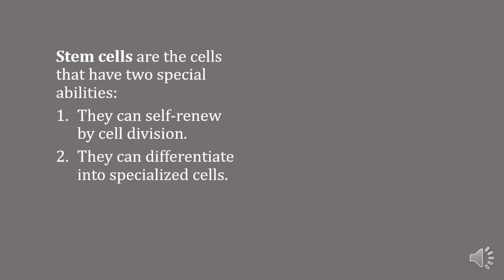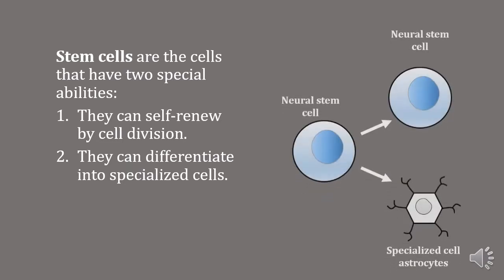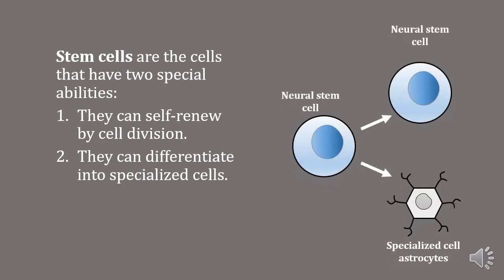Second, they can differentiate into specialized cells. For example, a neural stem cell can create new neural stem cells by cell division, and it can also give rise to specialized neural cells like astrocytes.